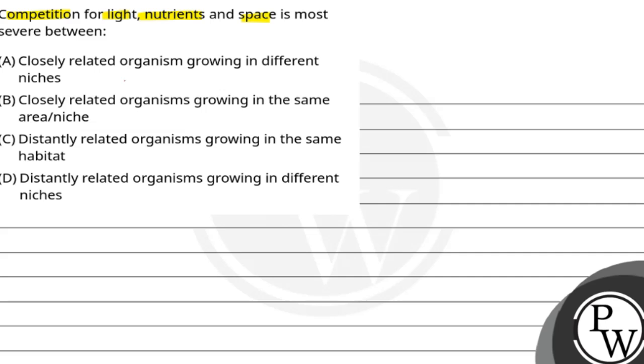The question is saying that there are some conditions: light, nutrients, space. The competition will be most severe in which place? There are four options. We will choose the correct option.